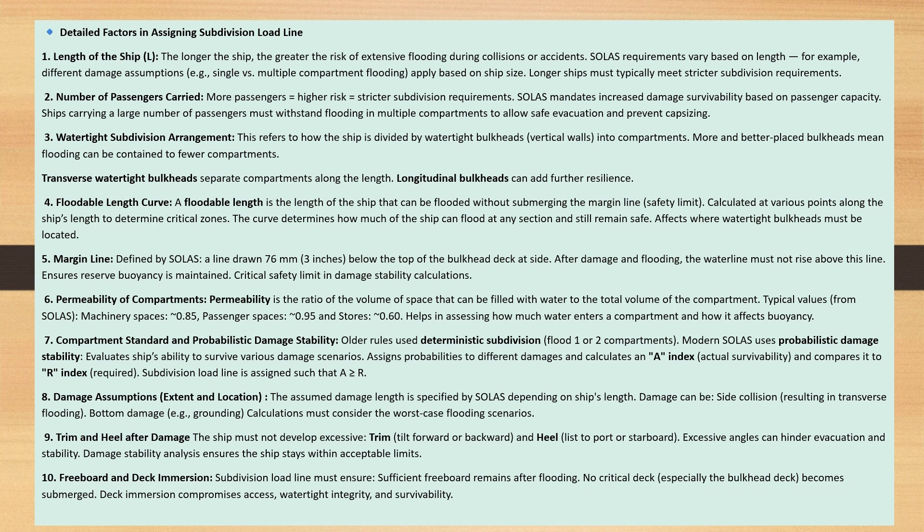Factor 3: Watertight Subdivision Arrangement. This refers to how the ship is divided by watertight bulkheads into compartments. More and better-placed bulkheads mean flooding can be contained to fewer compartments. Transverse watertight bulkheads separate compartments along the length, while longitudinal bulkheads can add further resilience.